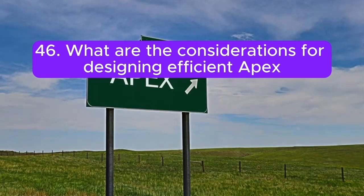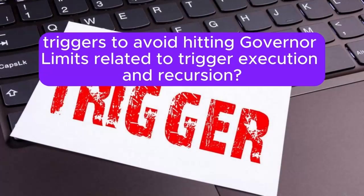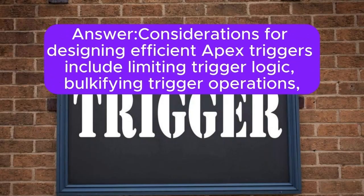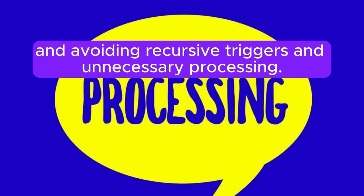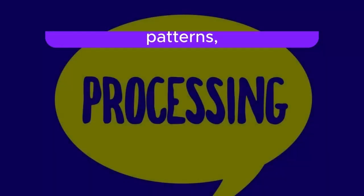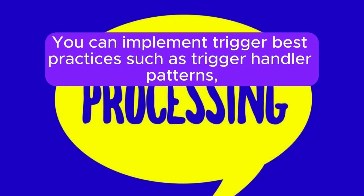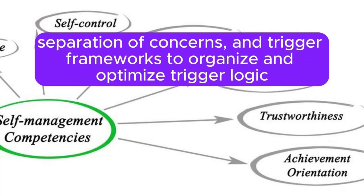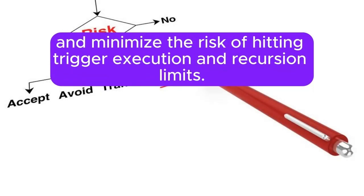Question 46: What are the considerations for designing efficient Apex triggers to avoid hitting governor limits related to trigger execution and recursion? Answer: Considerations for designing efficient Apex triggers include limiting trigger logic, bulkifying trigger operations, and avoiding recursive triggers and unnecessary processing. You can implement trigger best practices such as trigger handler patterns, separation of concerns, and trigger frameworks to organize and optimize trigger logic and minimize the risk of hitting trigger execution and recursion limits.